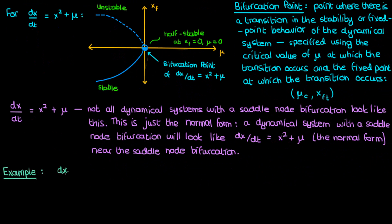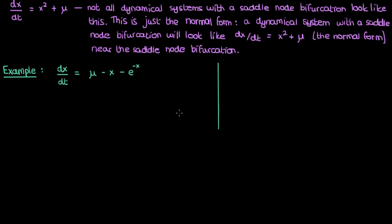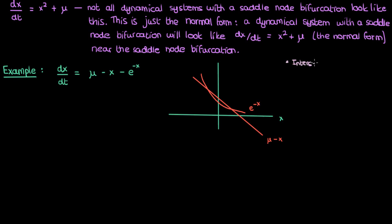Let's illustrate this with an example: dx/dt = μ − x − e^(−x). To find the fixed points, rather than graphing the full expression, we plot μ − x and e^(−x) separately. This is similar to a technique used previously where we plotted x³ and sin(x) separately. The intersections of μ − x and e^(−x) are the fixed points because at those intersections dx/dt equals zero.